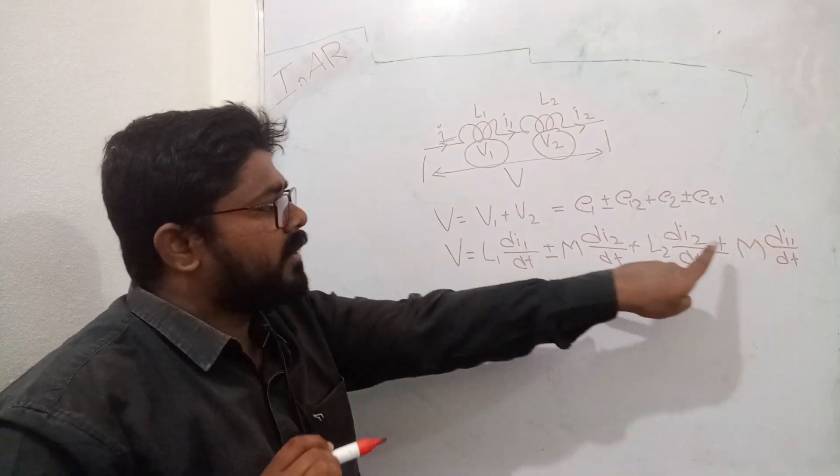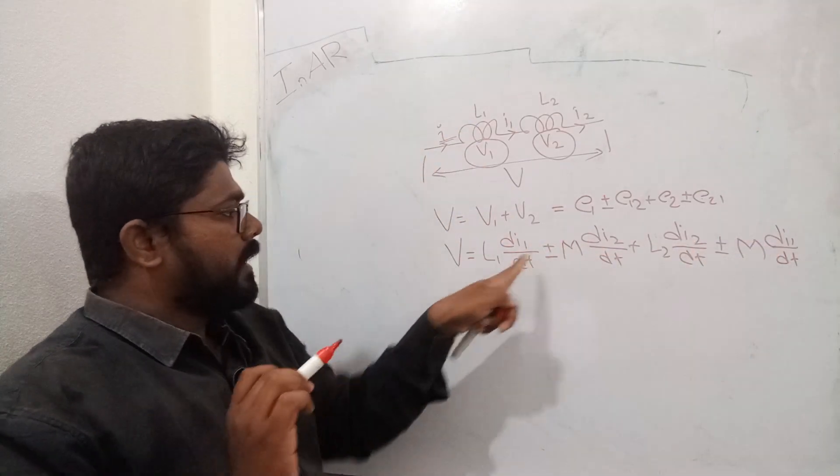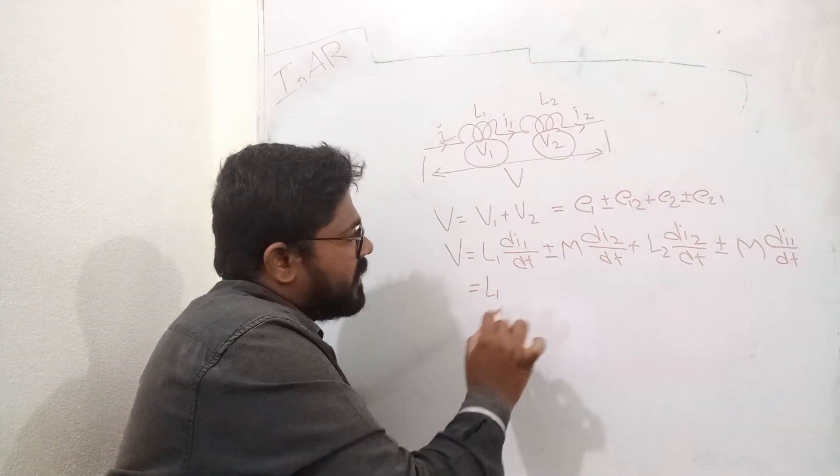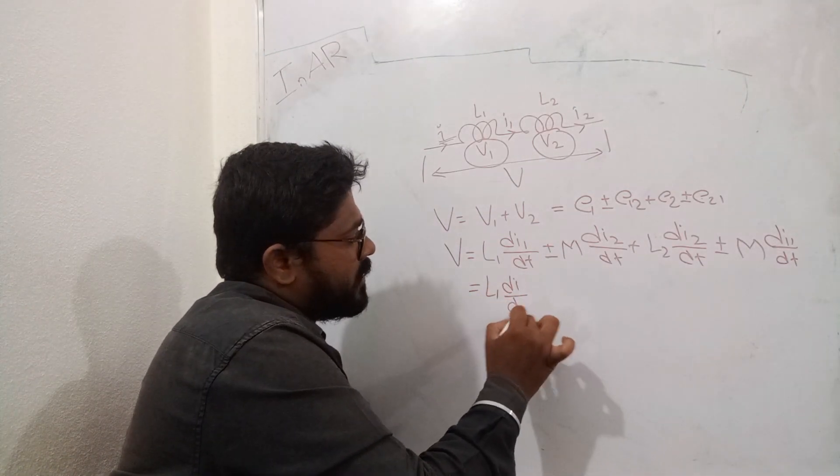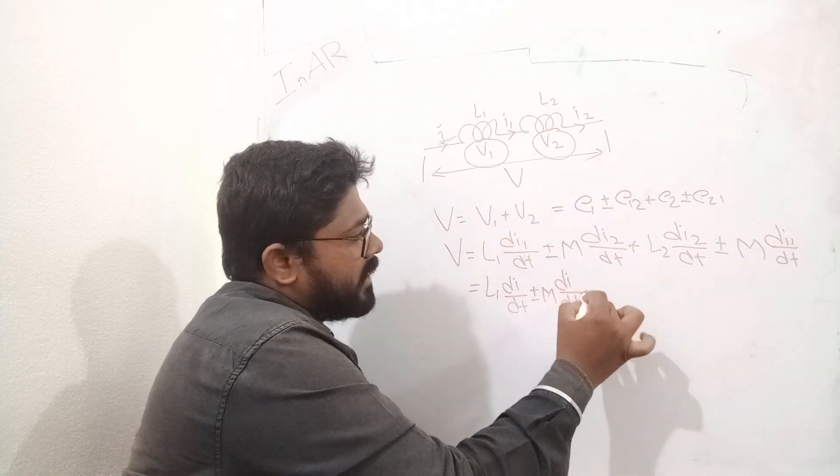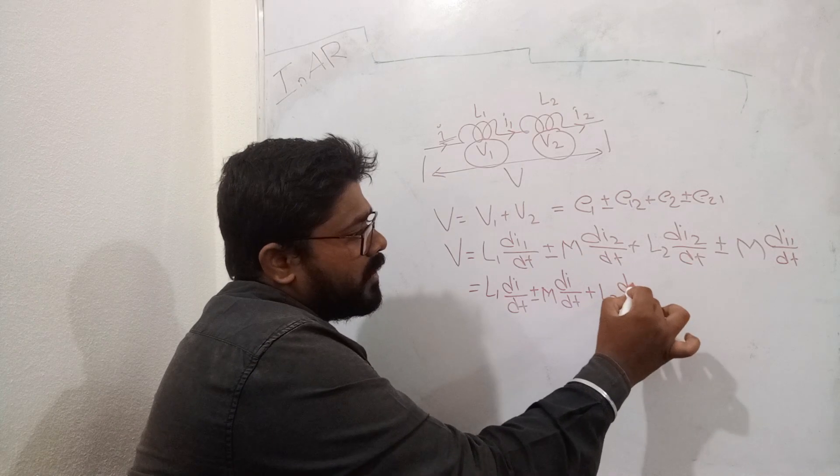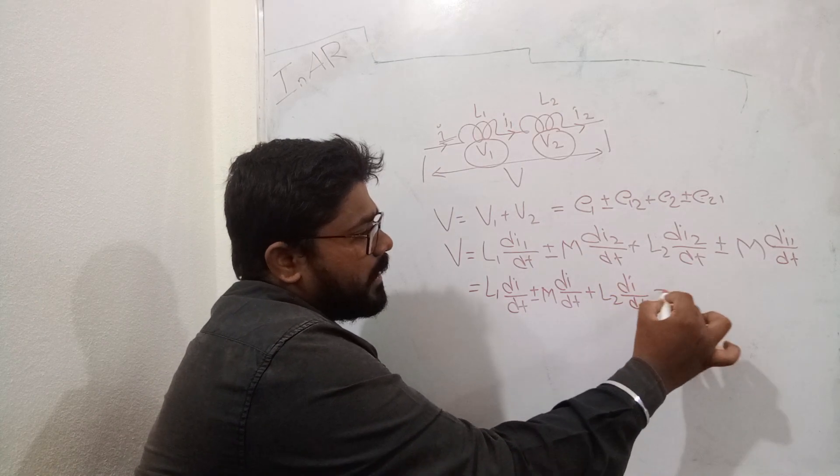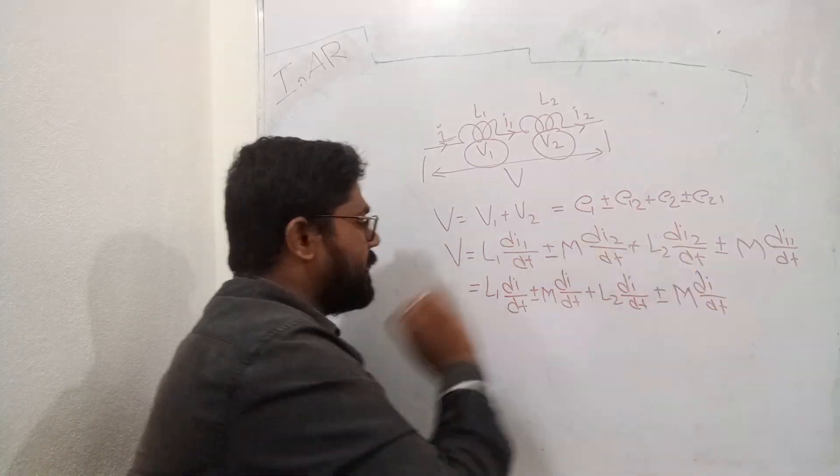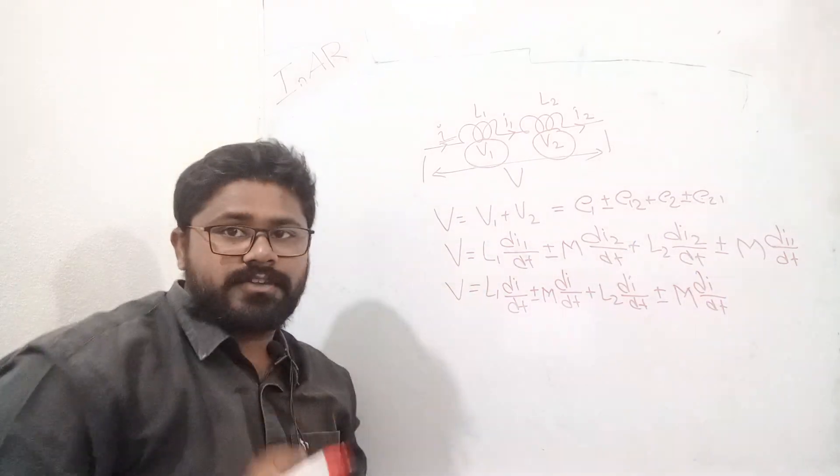If I say I1, I2, and I are all the same, then it will look like this: L1 di by dt plus or minus M di by dt plus L2 di by dt plus or minus M di by dt equals total voltage V.